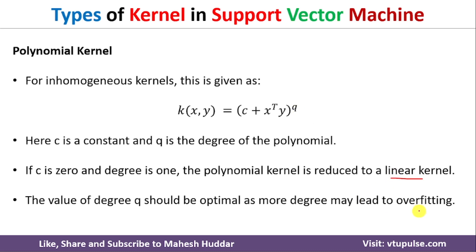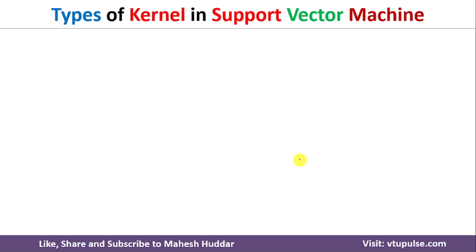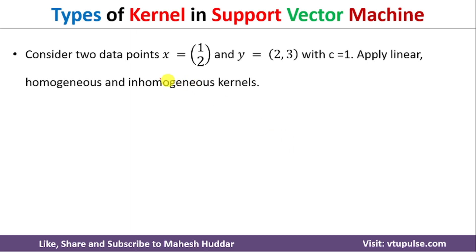We will take one simple example to understand these three kernels. Let x = [1, 2] and y = [2, 3] be the two data points, with c equal to 1. We will try to apply the linear, homogeneous, and inhomogeneous kernels.